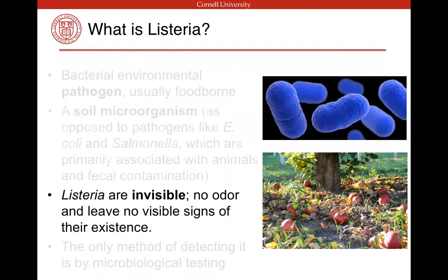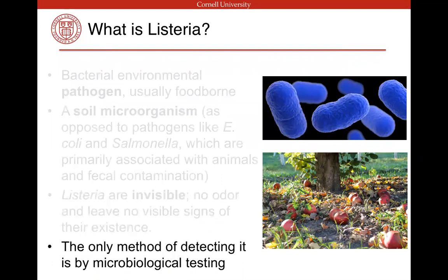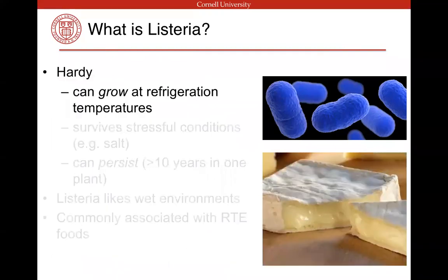Listeria is invisible — they're so small you can't see them with the naked eye, there's no odor — so you can't really look around your facility and say, oh, that's Listeria, that's where we're going to find it. The only real method of detecting it is by microbiological testing. It's very hardy and can grow at refrigeration temperatures, but refrigeration is still considered a good way to control Listeria because it does slow down the growth considerably.